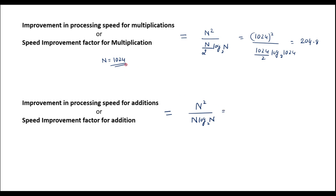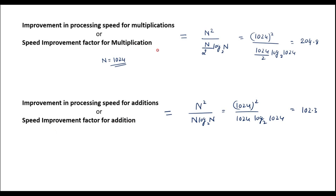Here if we consider N equal to 1024, substituting gives 1024 squared divided by 1024 times log 1024 to the base 2. Likewise, the speed improvement factor for addition and multiplication can be calculated for any value of N using these two formulae.